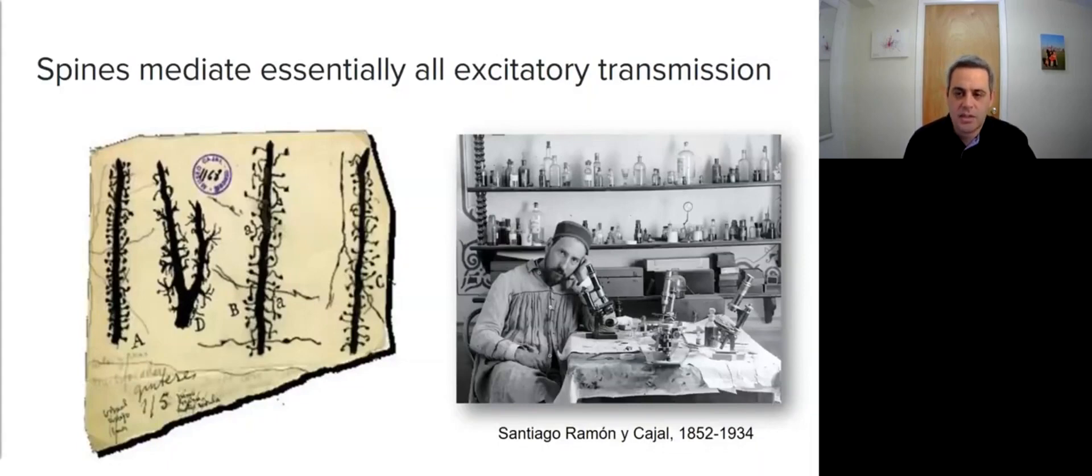Dendritic spines were first described by Ramon y Cajal in 1888, showing the rich diversity of spine shapes. The spines mediate essentially all excitatory transmission between neurons, so they are critical for brain function.